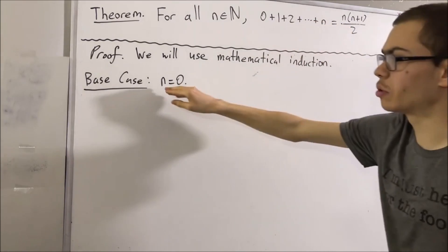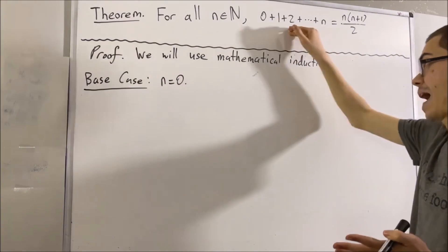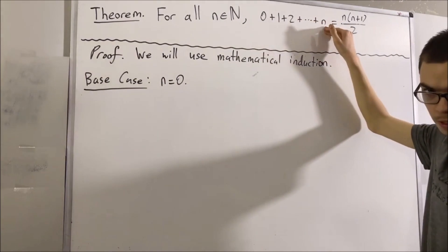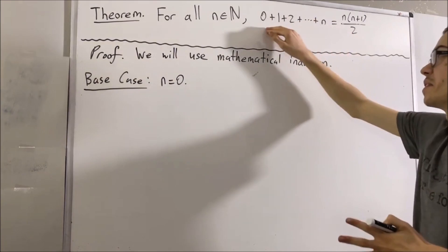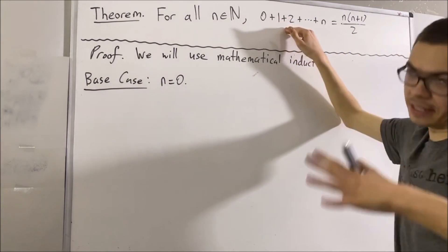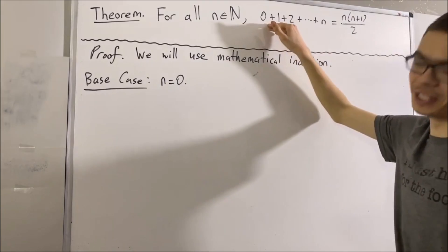But because n is equal to 0, that means we stop adding once we reach 0. So really, this sum is just 0 plus nothing else, because we stop once we reach 0.